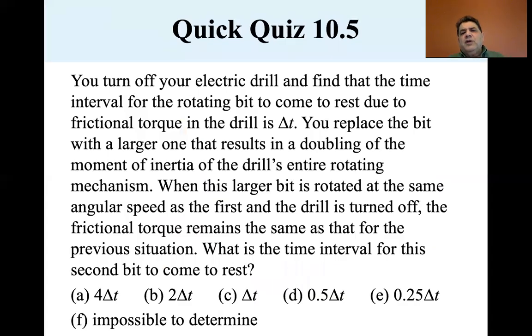You turn off your electric drill and find that the time interval for the rotating bit to come to rest due to frictional torque in the drill is delta T. You replace the bit with a larger one that results in a doubling of the moment of inertia of the drill's entire rotating mechanism. When this larger bit is rotated at the same angular speed as the first and the drill is turned off, the frictional torque remains the same as that for the previous situation.